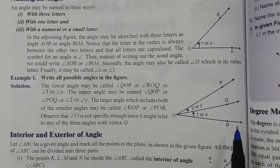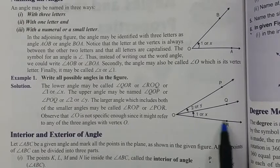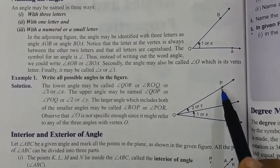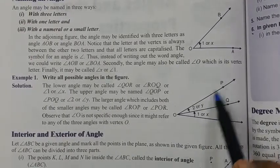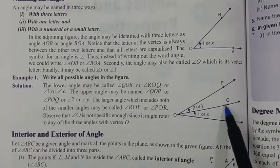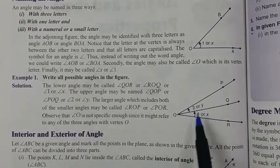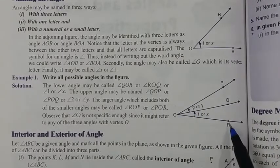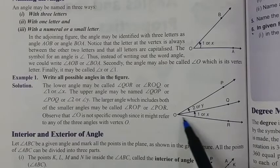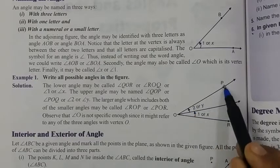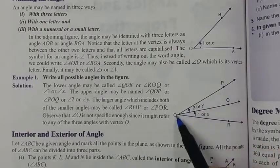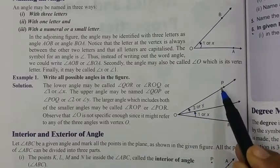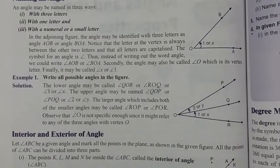So which ones can be written? Angle ROQ. Angle POQ is not possible. Angle 2 and angle Y are not possible. The valid ones are angle ROP and angle ROQ.